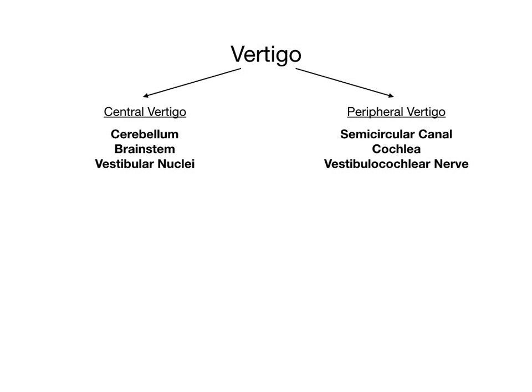Here's a summary of what I've just said. Central vertigo involves dysfunction of the cerebellum, which coordinates movement, dysfunction of the brainstem, and dysfunction of the vestibular nuclei. Peripheral vertigo involves dysfunction of the inner ear — namely the semicircular canal, the cochlea, the vestibulocochlear nerve, and other local structures. I'll get more into the anatomy when I go through peripheral vertigo, but this is just an overview.